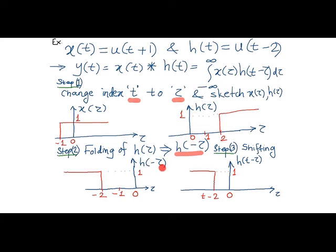Followed by folding operation we perform shifting operation h of t minus tau. Thus, the folded and shifted unit step function is shown in this position. In order to ensure whether we have correctly put the time variable as t minus 2, we can substitute t as 0 which will result into a same function as h of negative tau.